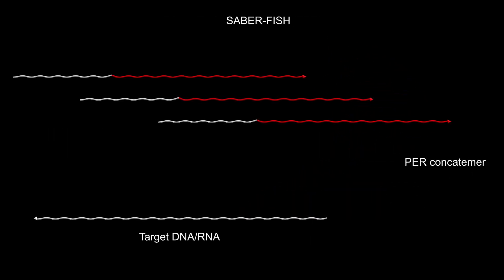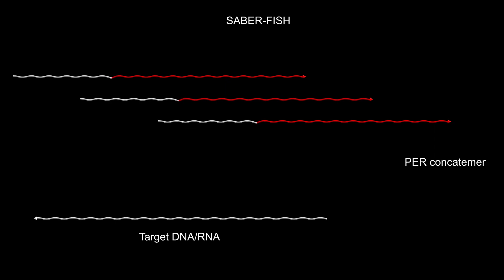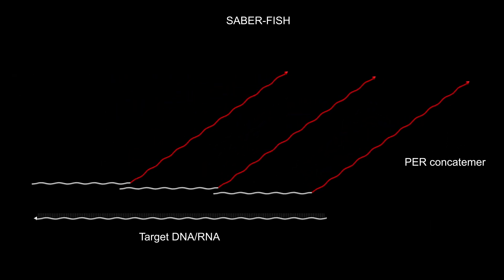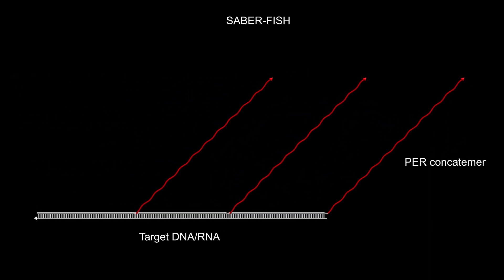The primer end of the resulting PER-generated concatemer strand works as a handle that is complementary to the target sequence within the genomic DNA or one of the many RNA molecules of a cell. In this example, three adjacent target sequences in a single molecule are simultaneously bound by three PER-concatemers.